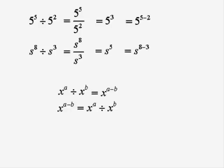X to the a divided by X to the b is X to the a minus b. And that rule works the other way round. And it's a rule which must be remembered.